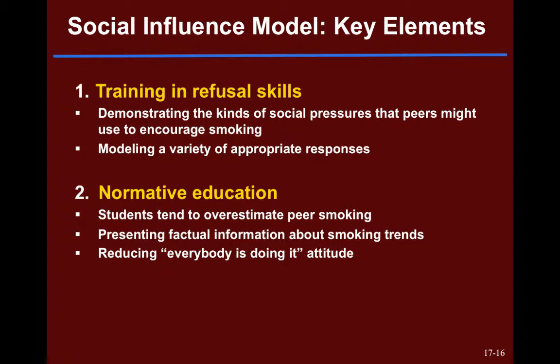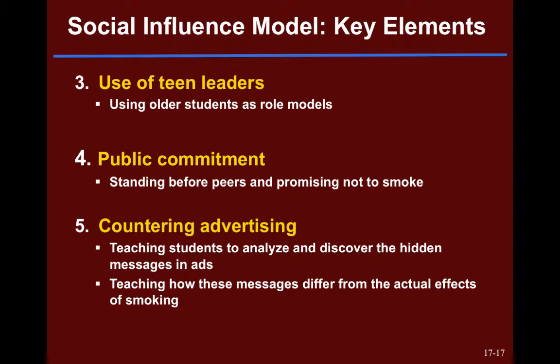We're not just going to tell you to say no — we're going to help you figure out how to do it. Another important part of the social influence model is normative education. If we ask students how many of their peers smoke, use marijuana, or use alcohol, students tend to overestimate that in their peer population. So one tool is presenting factual information about actual trends of substance use, taking out that 'everybody's doing it' attitude.